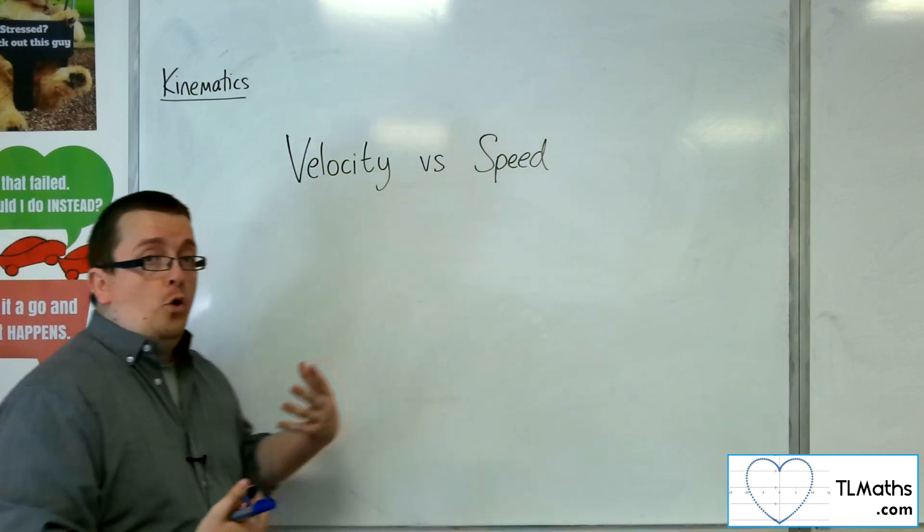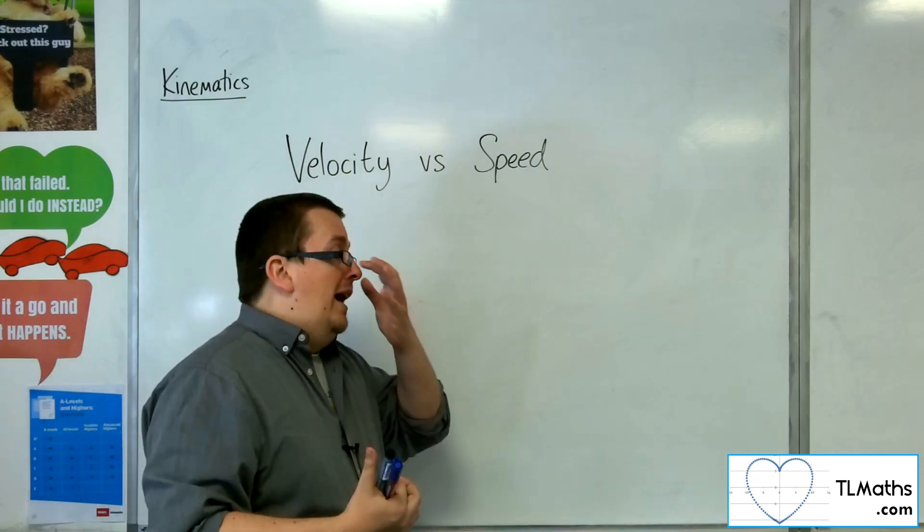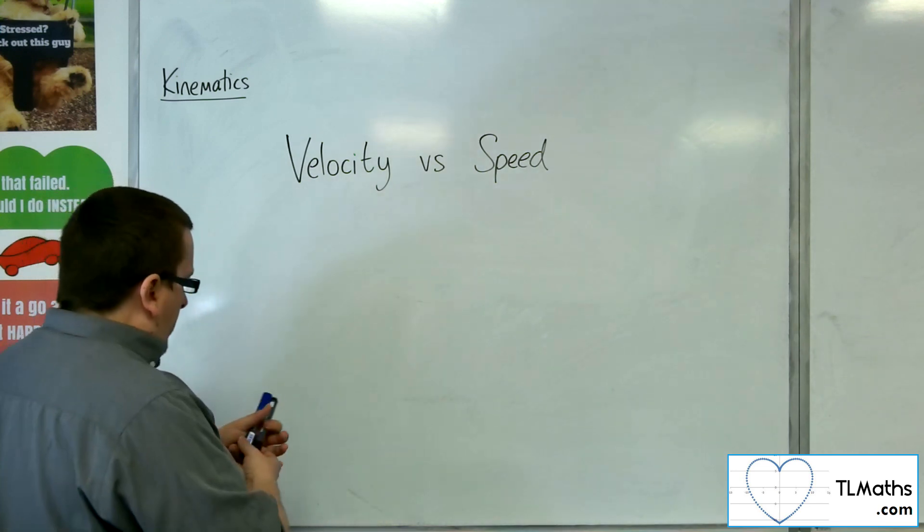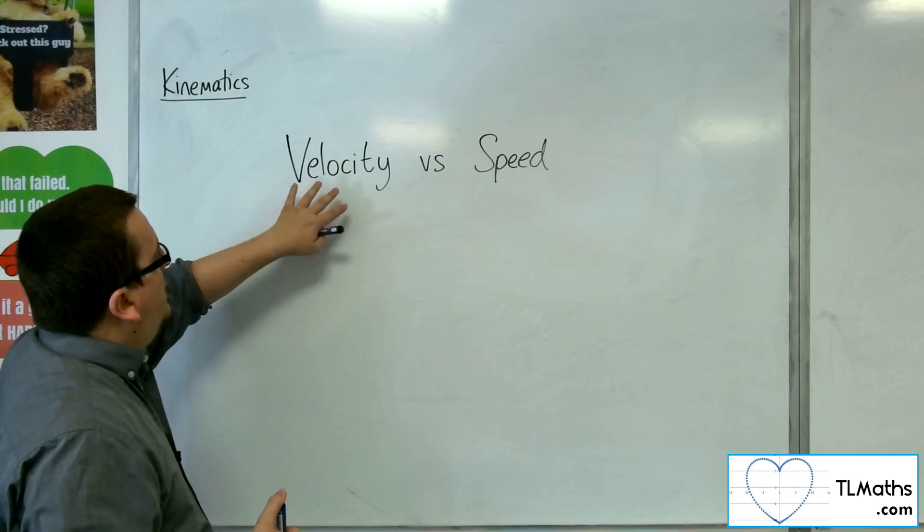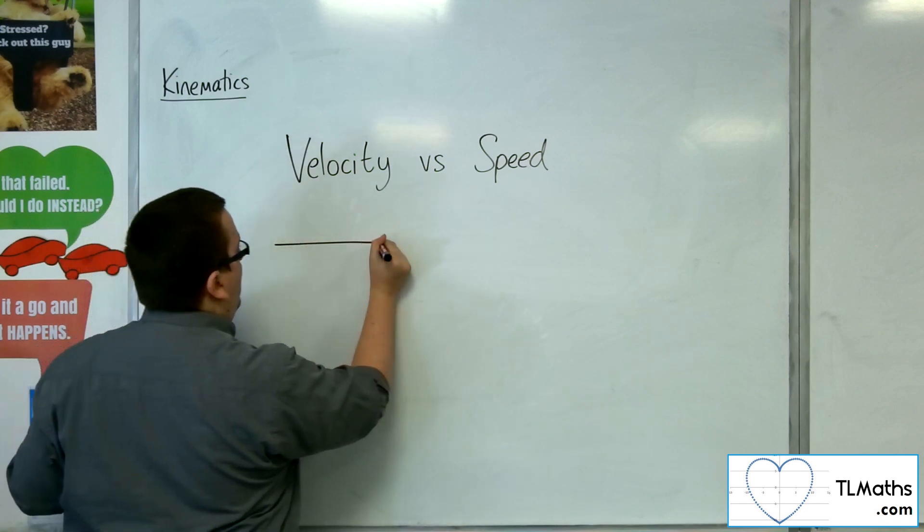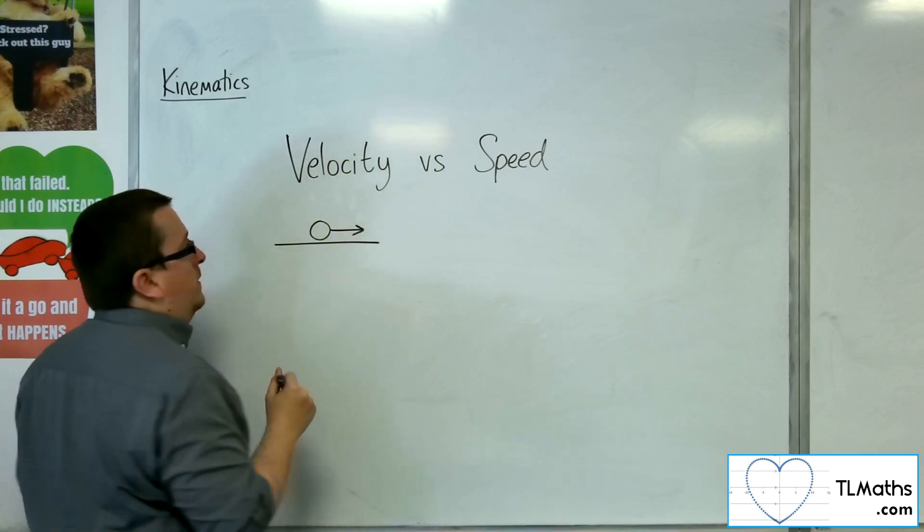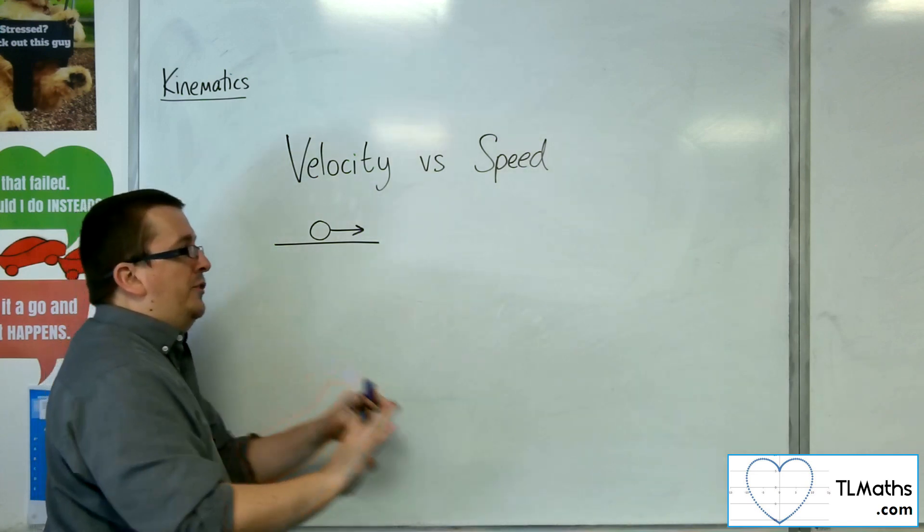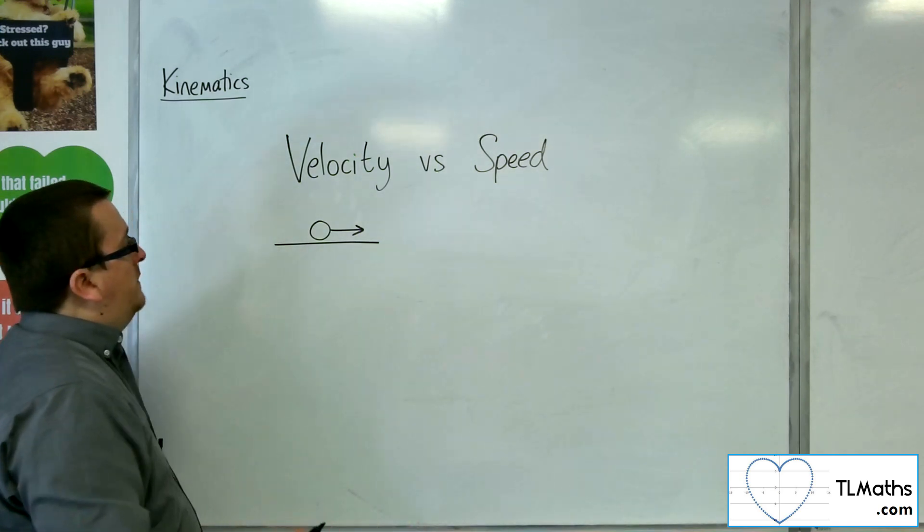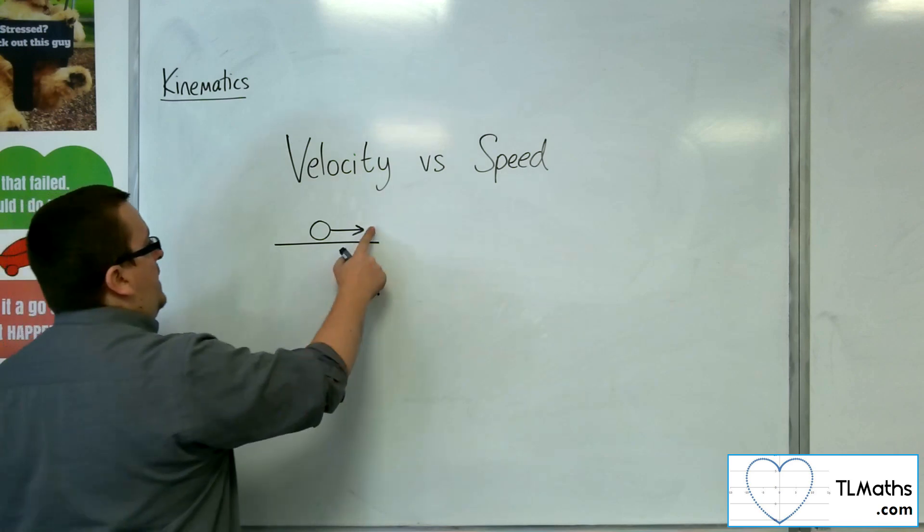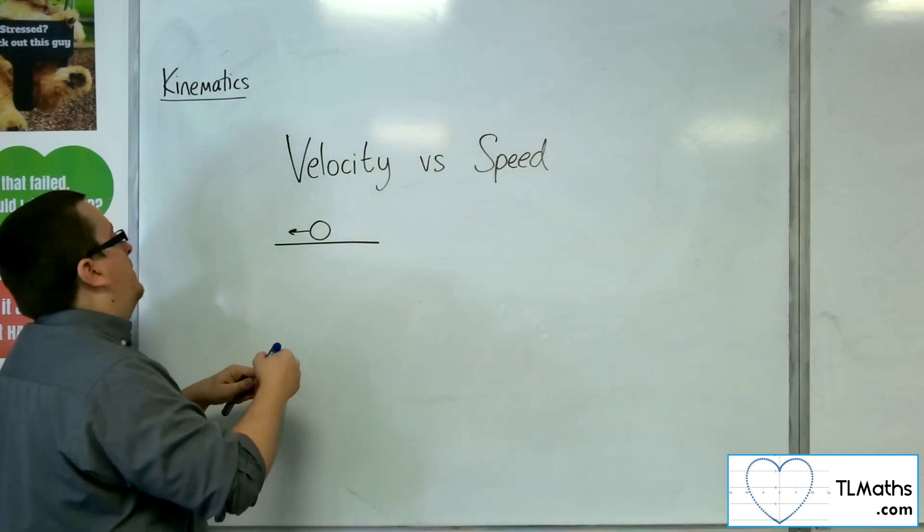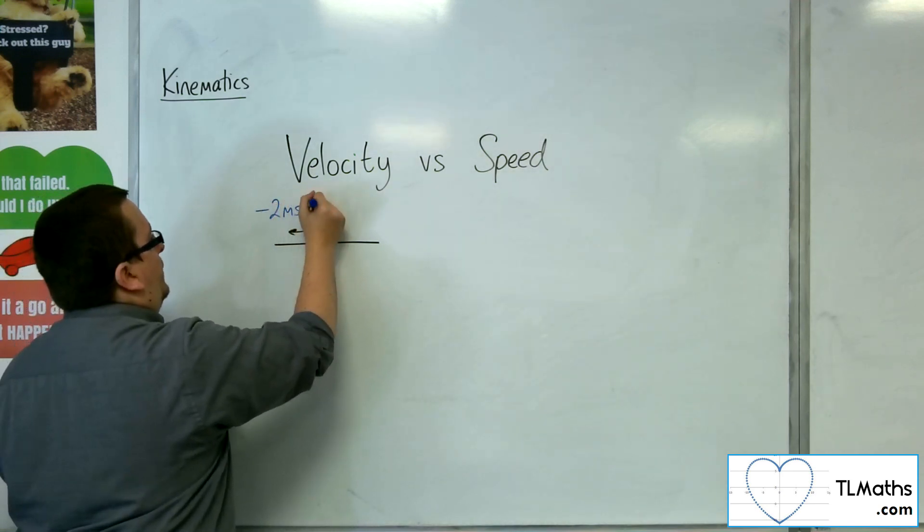So velocity can be positive or negative depending on which way a particle is traveling. What you need to make sure you're clear on is that velocity can be positive or negative. So a particle may well be traveling towards the right on our diagram, and we might consider that as the positive direction. And so we would consider it having a positive velocity if it was moving that way. And then if it was traveling back the other way, then we might have a negative velocity. In which case it could be something like minus 2 meters per second, for example.